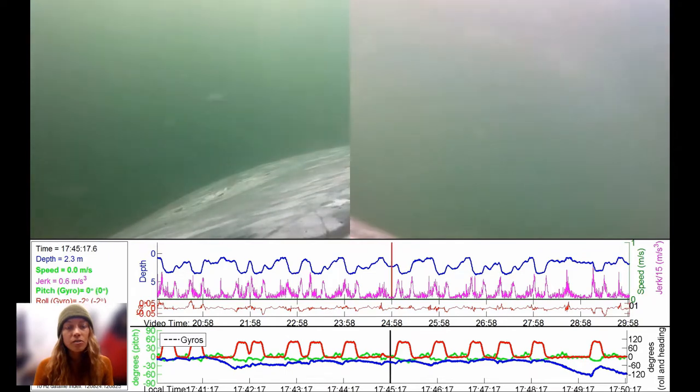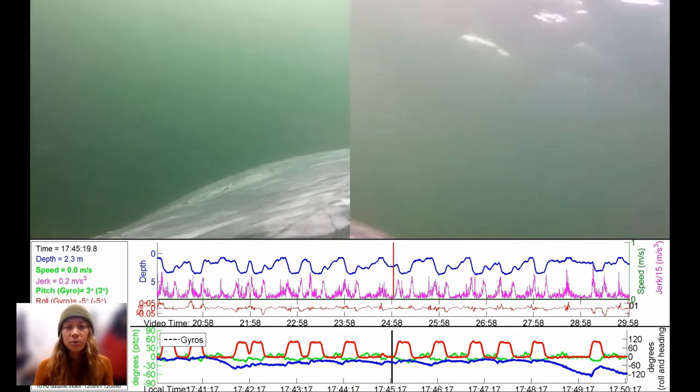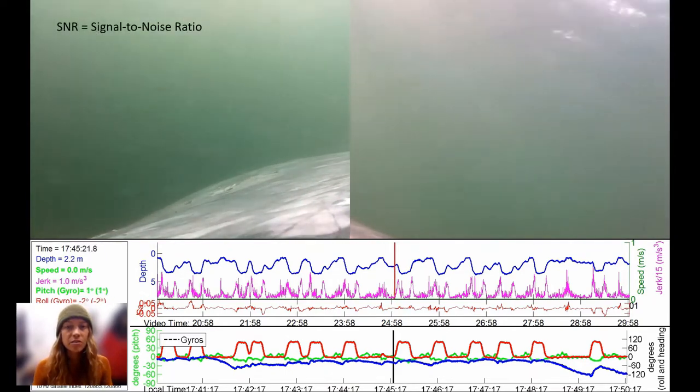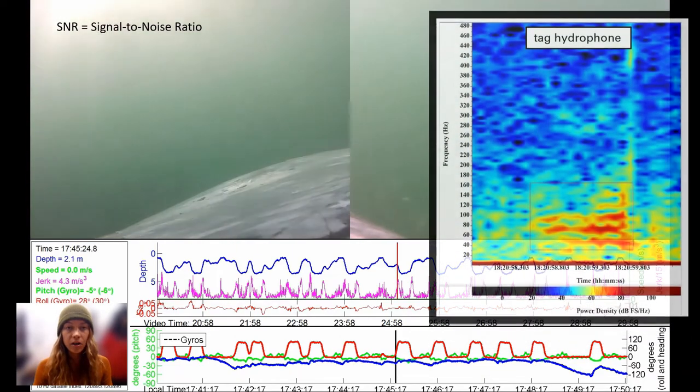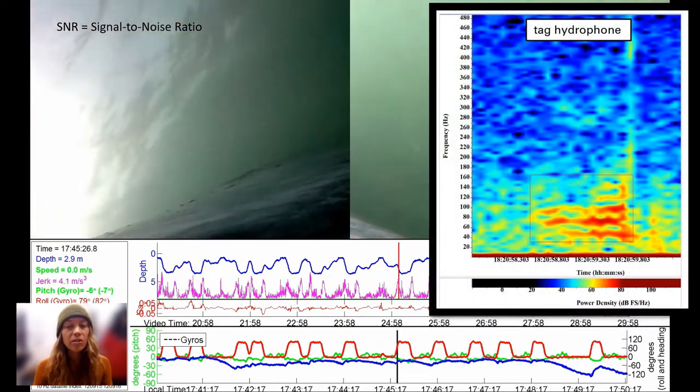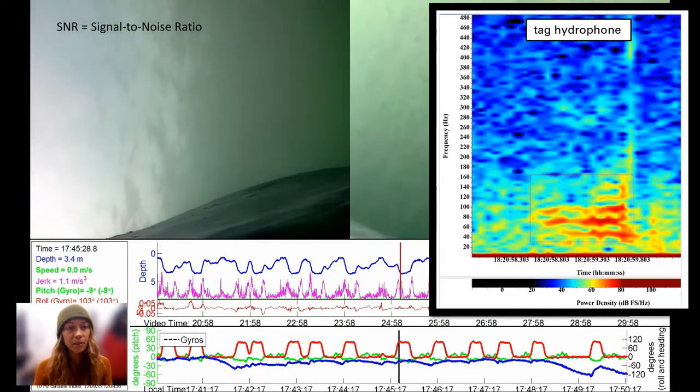Calls were first sorted based on comparative intra-deployment signal-to-noise ratios, with high SNR calls, like this class 3 call, having components with a power density of over 70 dB.